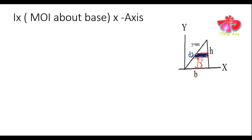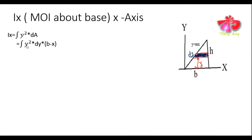The strip has thickness dy and its length is (b − x). So we can apply the formula: moment of inertia about base Ix = ∫ y² dA, where y is the perpendicular distance from the base to the considered strip, and dA is the area of the elemental strip. We substitute dA = (b − x) dy.